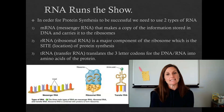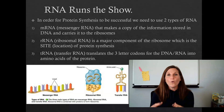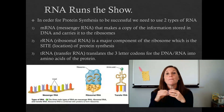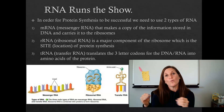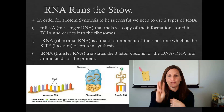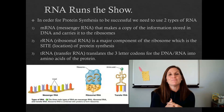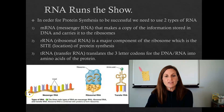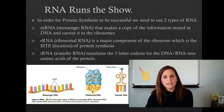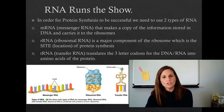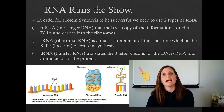The tRNA holds the connection between the genetic code and the amino acid, and the messenger RNA brings the original recipe so we know which amino acid to add next. We need all three types of RNA to successfully make a protein. The mRNA holds the code, the ribosomal RNA is the blobby location, and the tRNA has an anticodon that matches the mRNA and carries a corresponding amino acid to connect as part of the protein.